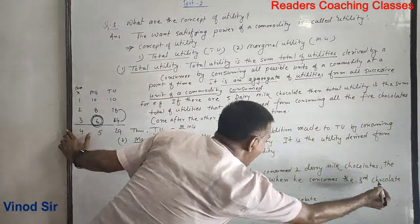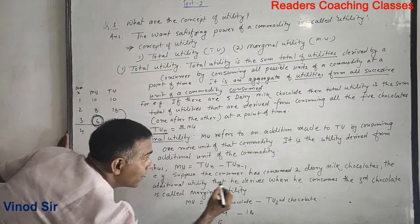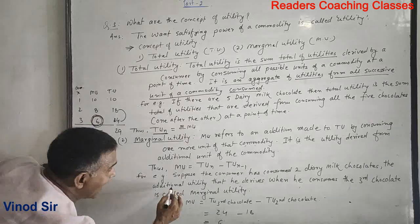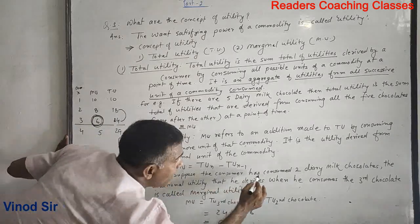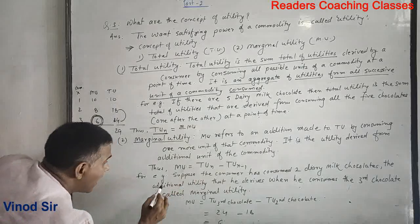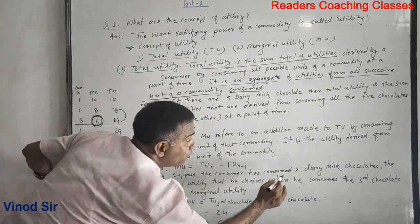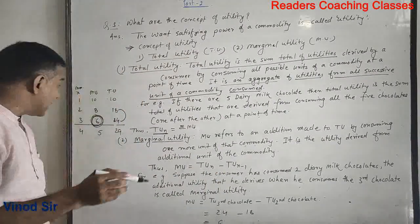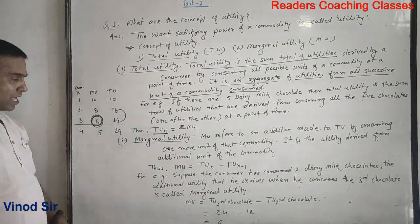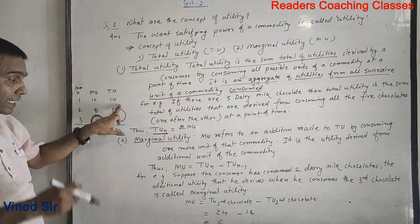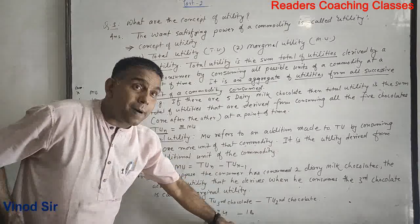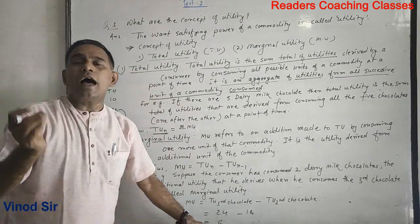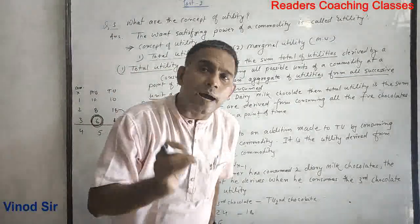Suppose the consumer has consumed two dairy milk chocolates; the additional utility that he derives when he consumes the third chocolate is called marginal utility. The marginal utility of the third chocolate equals the total utility up to the third unit minus the total utility up to the second unit. This was our concept of total utility and marginal utility.